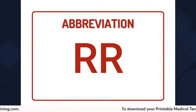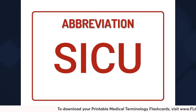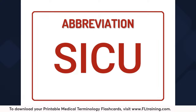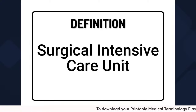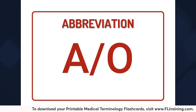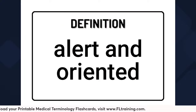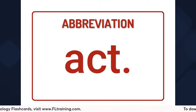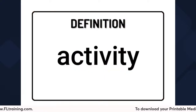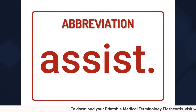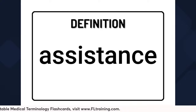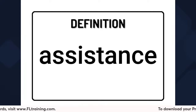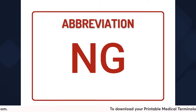R-R is the medical abbreviation for recovery room. S-I-C-U is the surgical intensive care unit — so if someone has a major surgery, they may go to the SICU instead of the ICU. A-slash-O is alert and oriented. ACT is short for activity. Assist is short for assistance — out of bed with the assist of two means they need assistance from two people in order to get out of bed. N-G means nasal gastric.